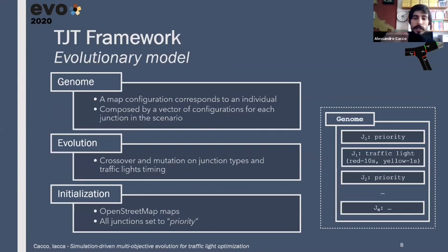The genome represents all the junctions in the selected scenario. It has as many genes as junctions in it, specifying the type of the junction and the traffic light timings, as shown on the schema on the right. Genes are subject to mutation and crossover between alleles, which acts both on the corresponding junction type and traffic light timings, in order to exploit what may be good in one scenario and in another, and exploit the synergies between the combinations.